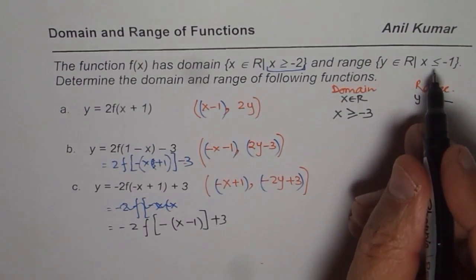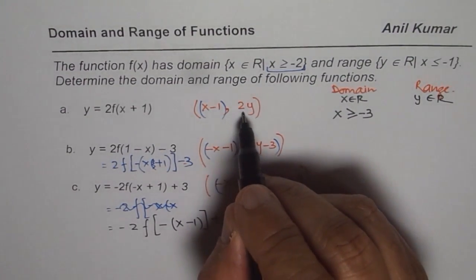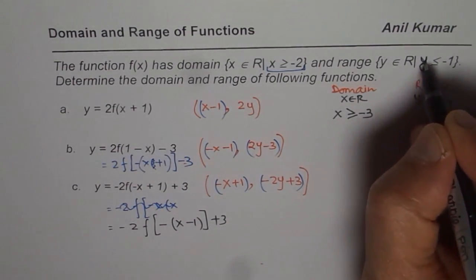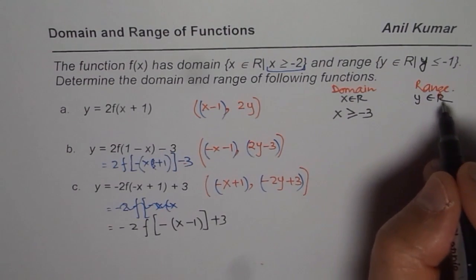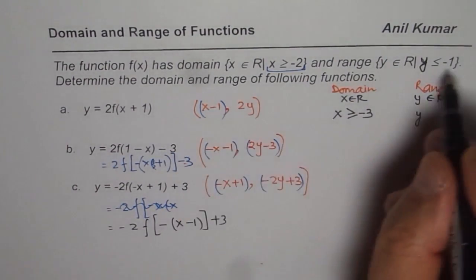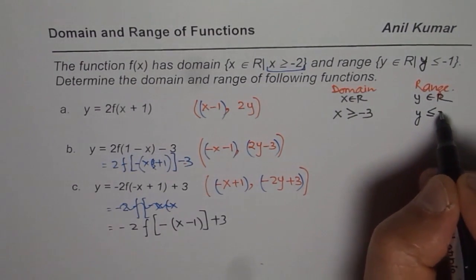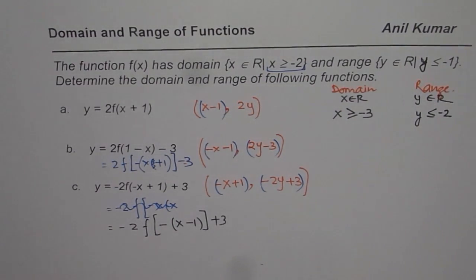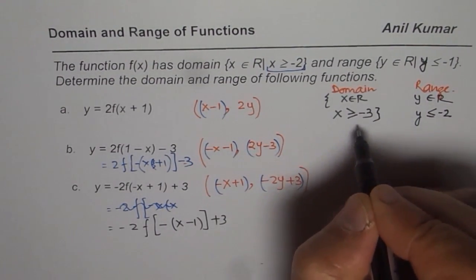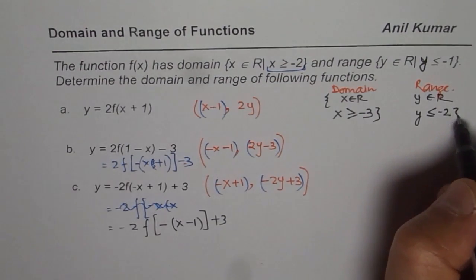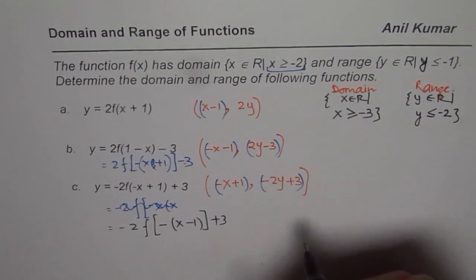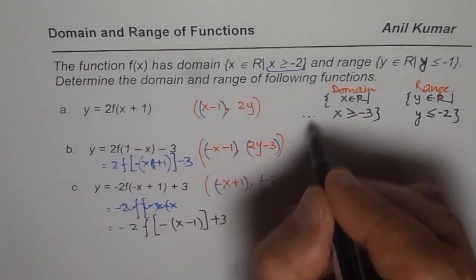As far as the range is concerned, we have to multiply by 2. So range becomes y belongs to real numbers where y, multiplied by 2, is less than or equal to minus 2. So domain is all real x with that restriction, and that is the range condition. That is for the first one.